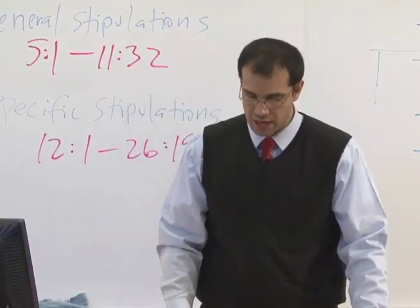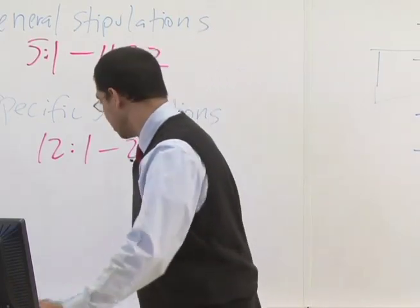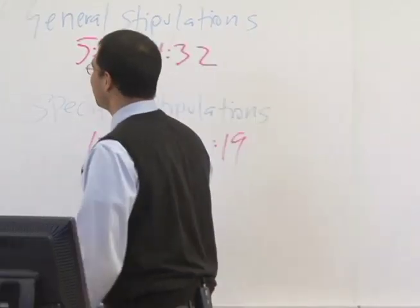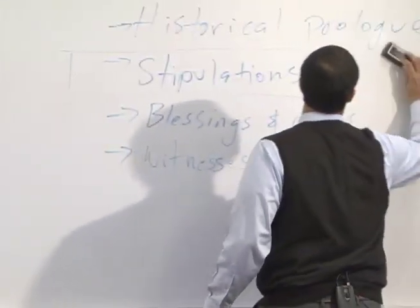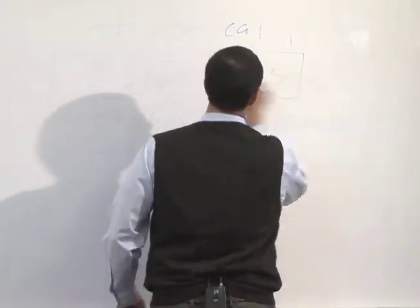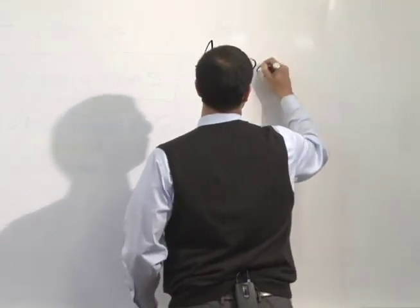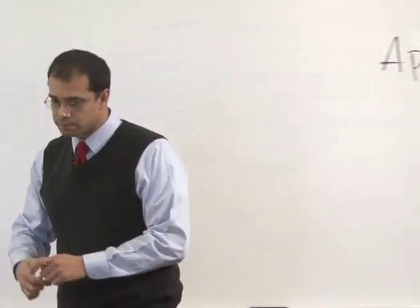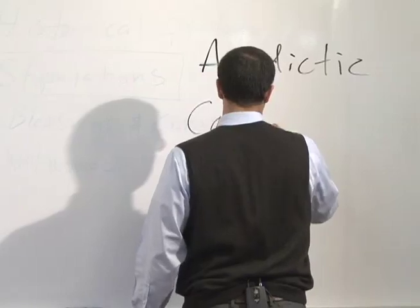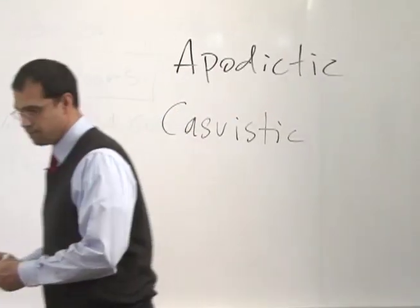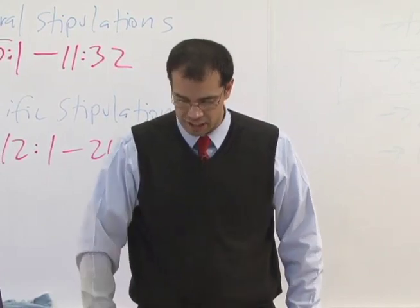It's important to recognize the distinction. The distinction actually works itself out in the actual language of the book. The kind of laws we find in the general stipulation section are described as apodictic, while the laws in the specific stipulation section are described as casuistic.